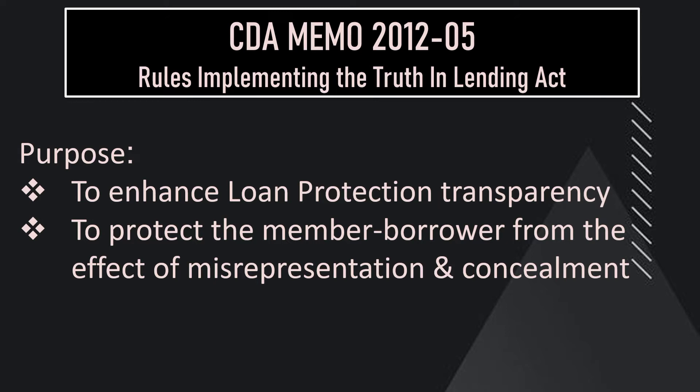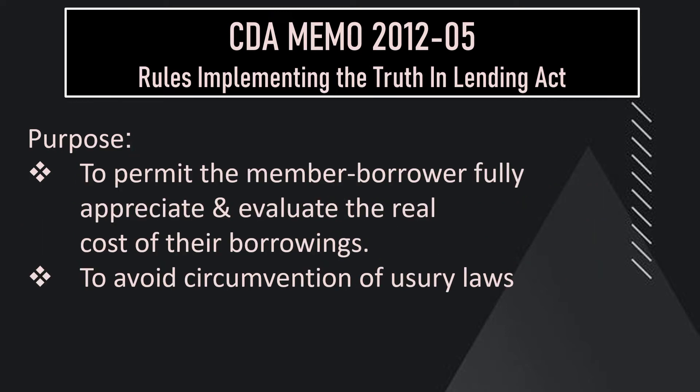CDA Memo 2012-05 has four purposes: number one, to enhance loan protection transparency; number two, to protect the member-borrower from misrepresentation and concealment; number three, to permit the member-borrower to fully appreciate and evaluate the real cost of their borrowings; and number four, to avoid the circumvention of the usury law.